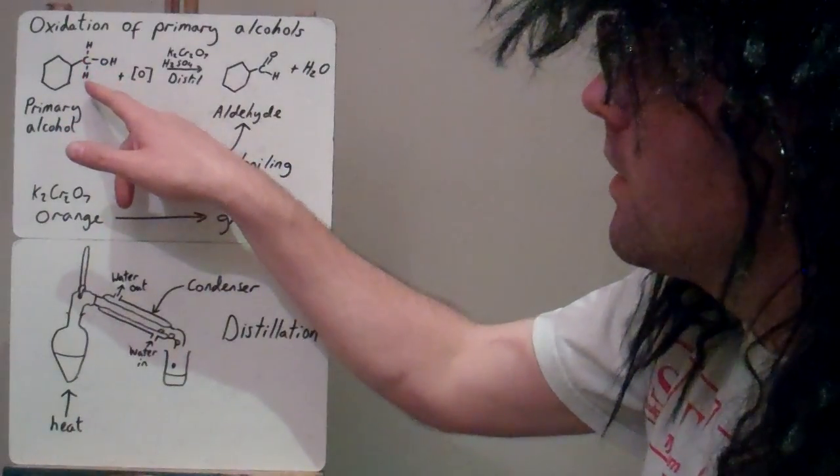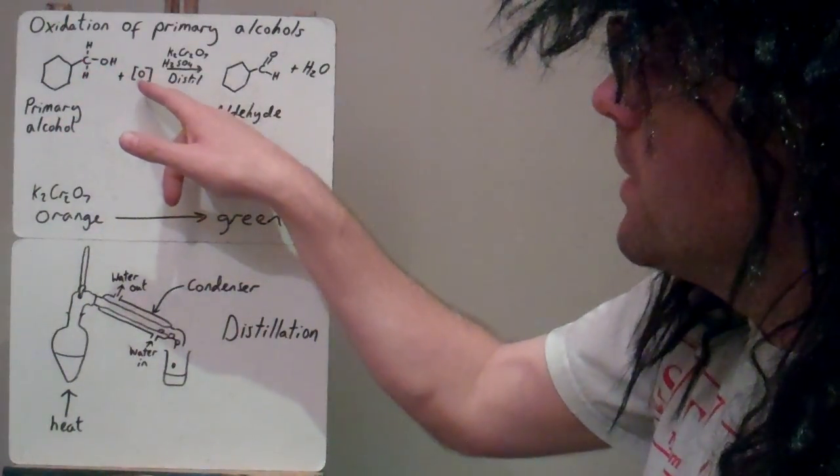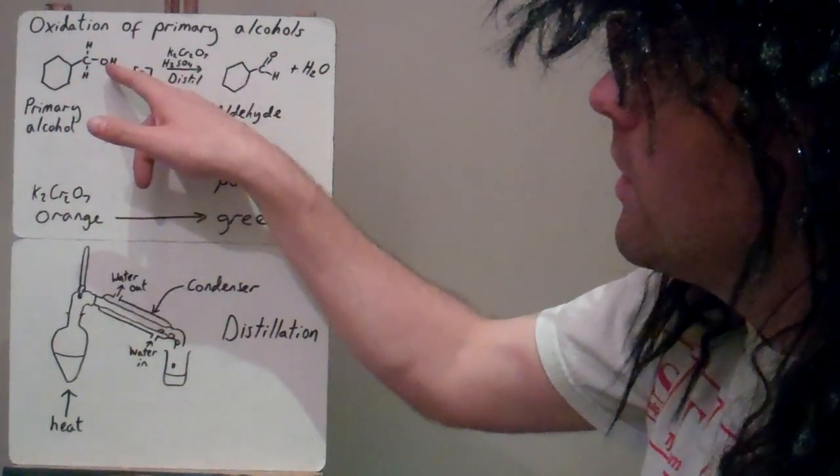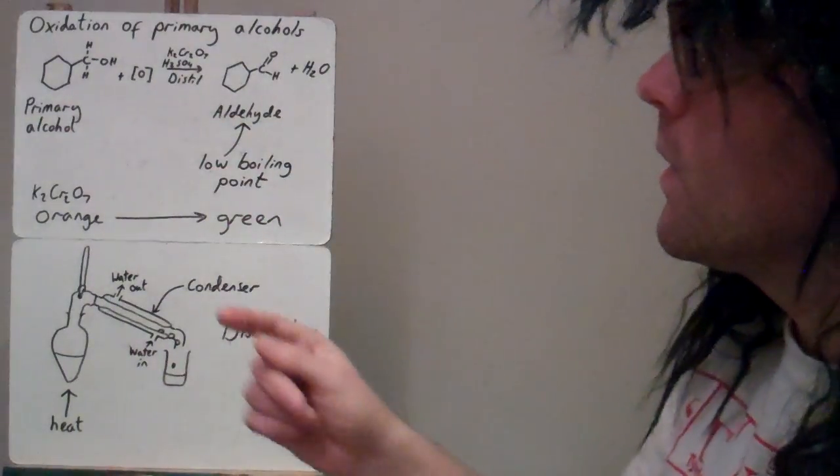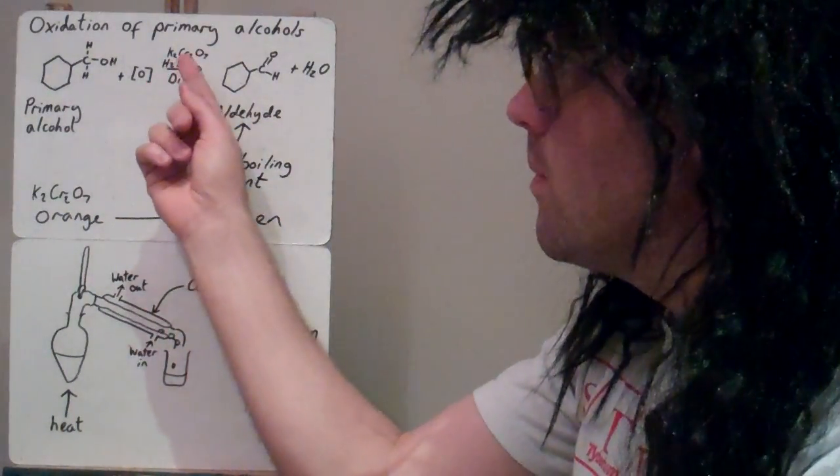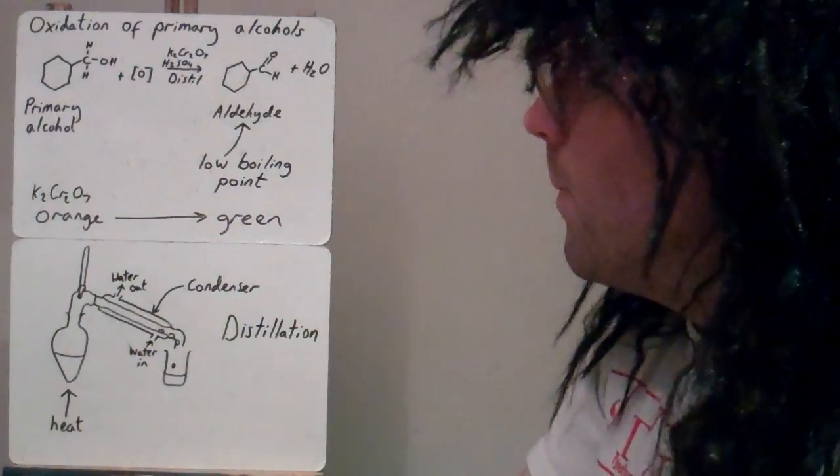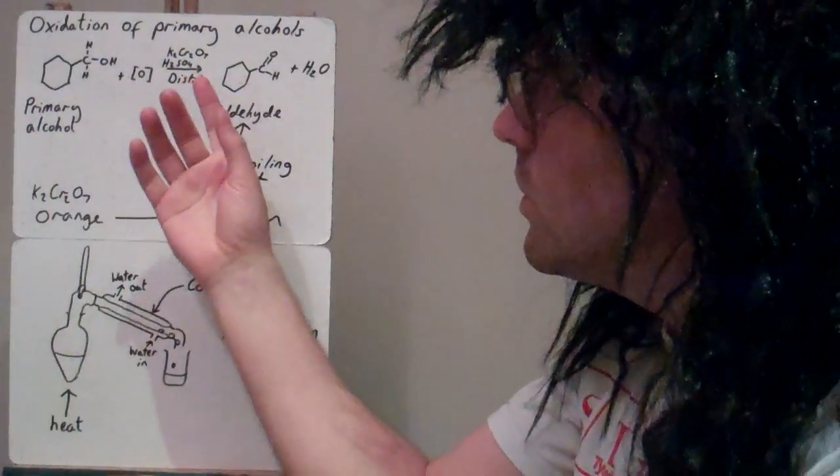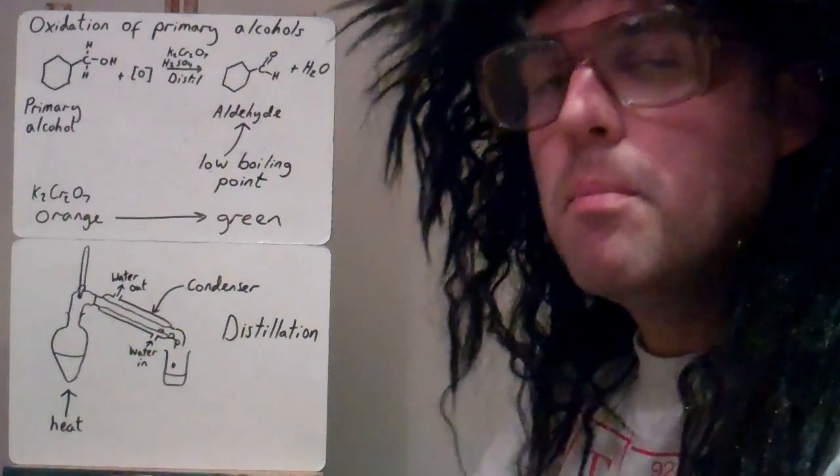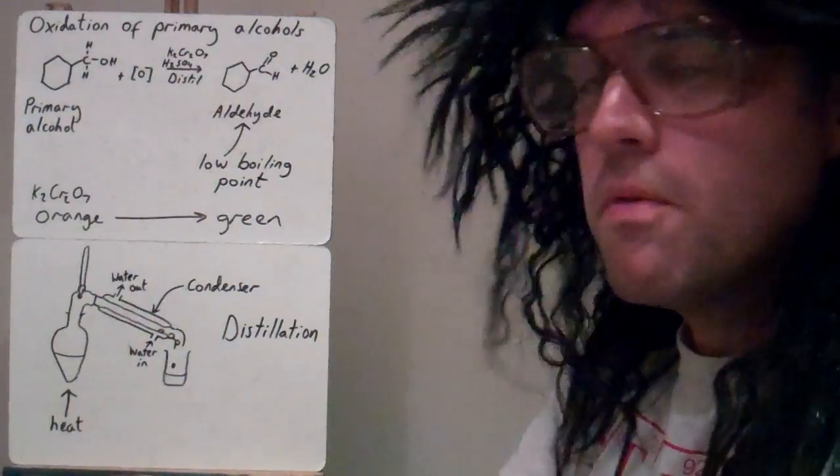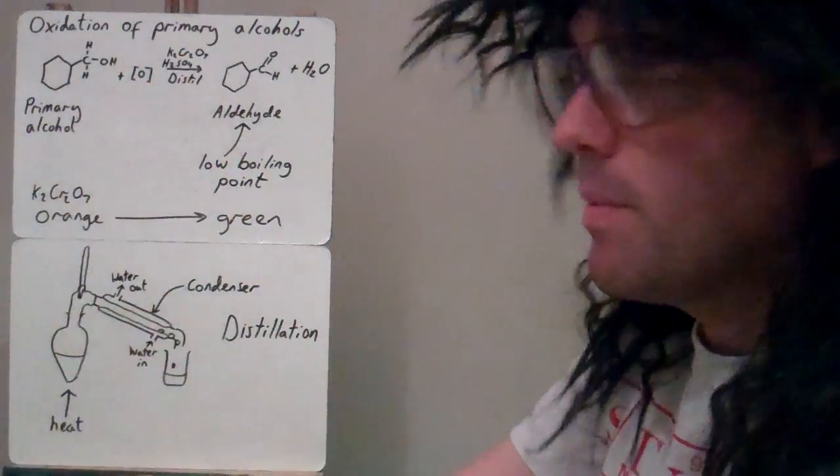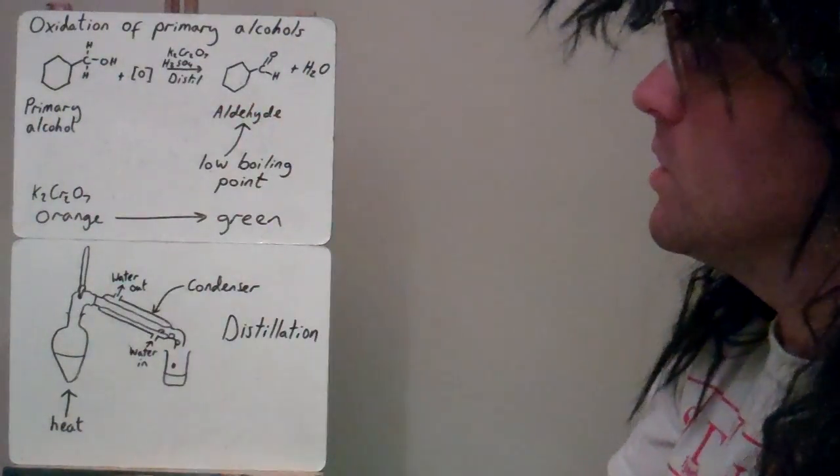So we've lost the hydrogen off that carbon there, combining this oxygen here and another hydrogen off the oxygen there to make H2O. This here represents the oxidizing agent. Later on A2 you can actually write a more balanced equation for this. We simplify it by just having an O which represents the oxidizing agent and that balances the oxygen on this side here as well.